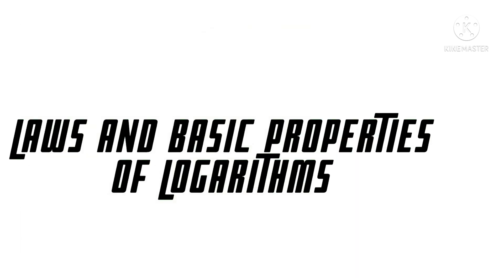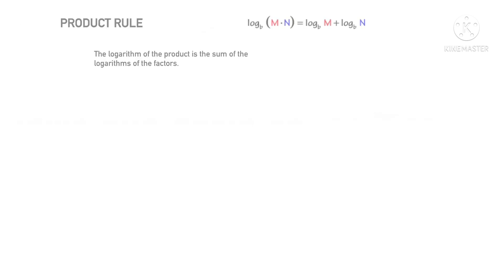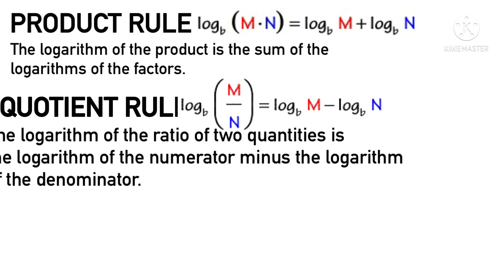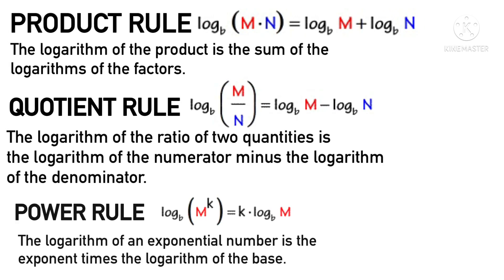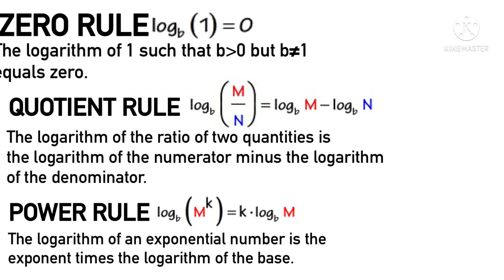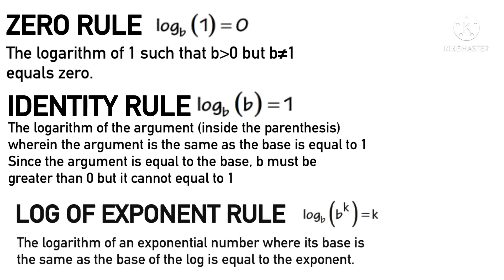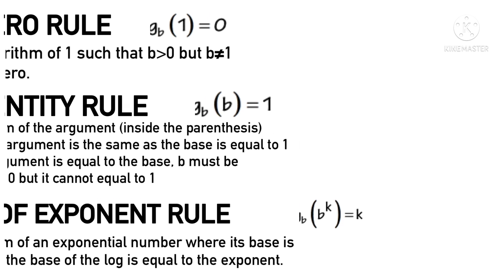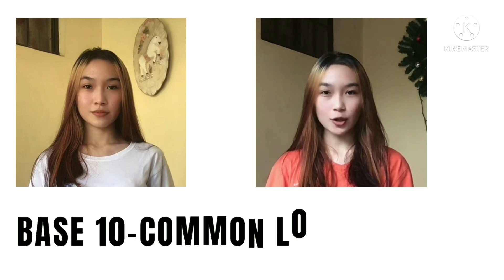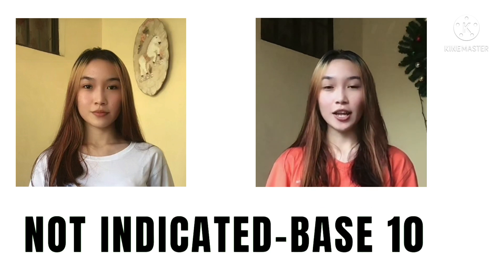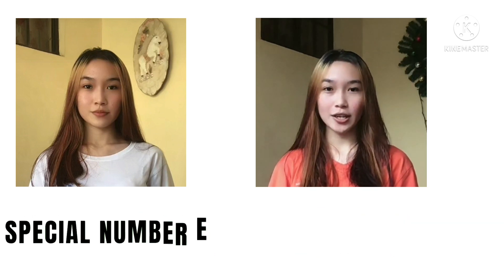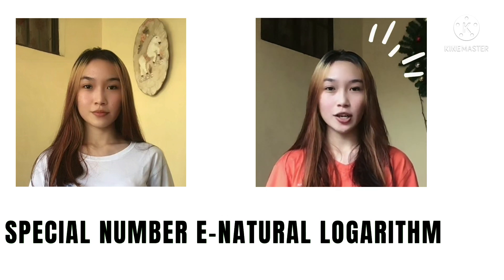Laws and basic properties of logarithms. There are other things to know about logarithmic functions. If the base is 10, it is called the common logarithm, and if the base is not indicated, the base is 10. And if the base is the special number e, it is called the natural logarithm.